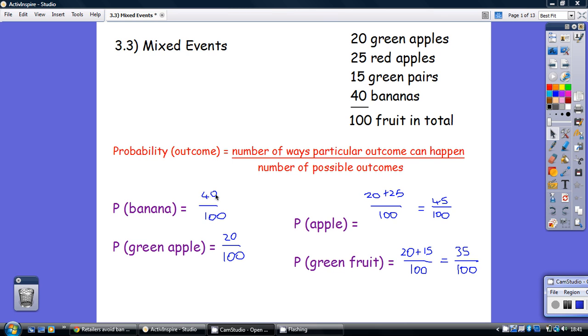The best way of getting that concept is by way of a fraction. What's the likelihood of anything happening is the number of ways this particular thing can happen, divided by the total number of possible outcomes.